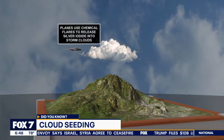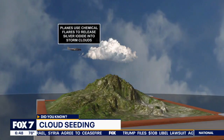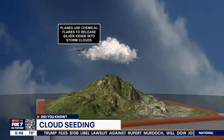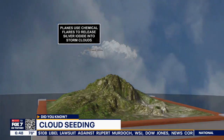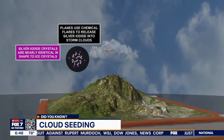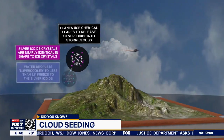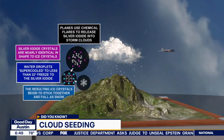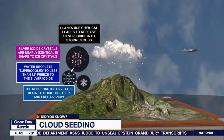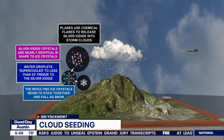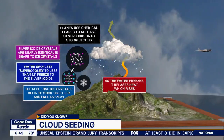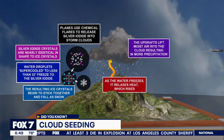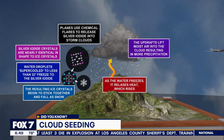Here's an example of how cloud seeding is performed from an aircraft. Planes use chemical flares to release silver iodide into the clouds. Silver iodide crystals are nearly identical to ice crystals. Water droplets are supercooled to less than 32 degrees to freeze the silver iodide, and the resulting ice crystals begin to stick together and condense as they fall as snow. As the water freezes, it releases heat which rises — the updrafts lift moist air into the cloud, resulting in more precipitation.